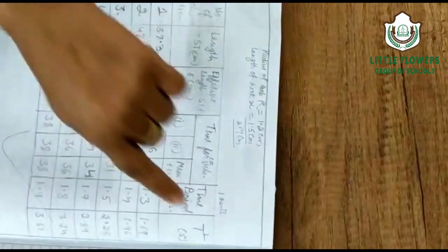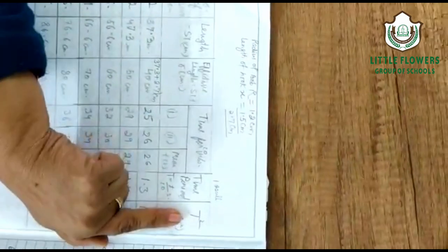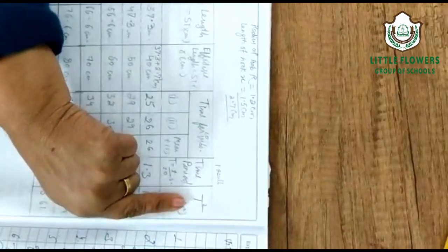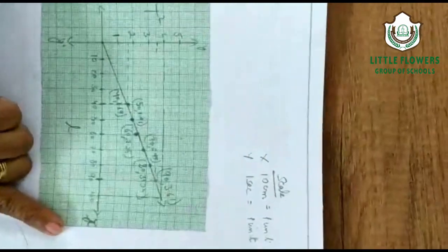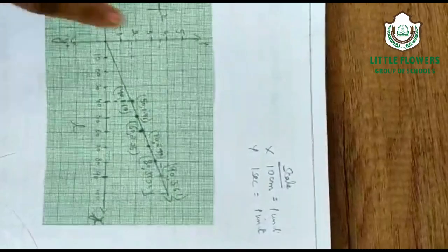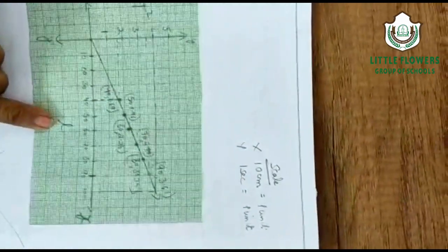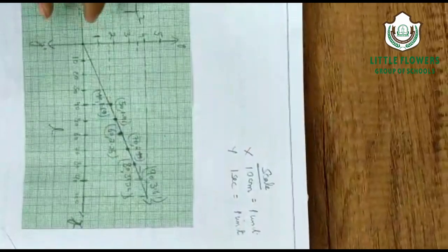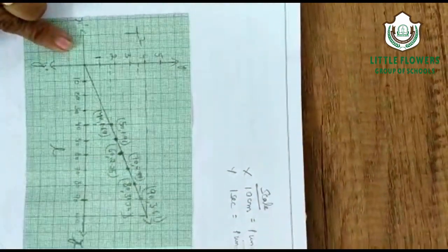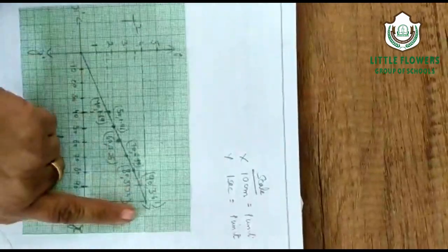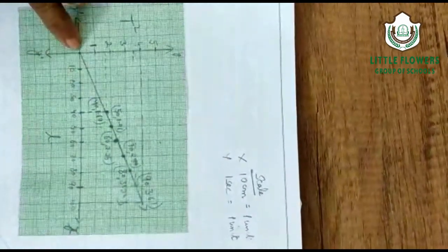After calculating the length and the time, our aim is to draw the graph between length L and T-squared. On the x-axis we take L, and on the y-axis we take T-squared. Before plotting, we mention the scale: on the x-axis, 10 cm represents 1 unit, and on the time axis, 1 unit represents 1 second. Plot the points from the observation table, join them as best you can, and the line should start from the origin.